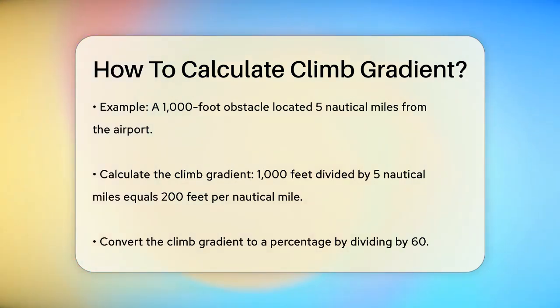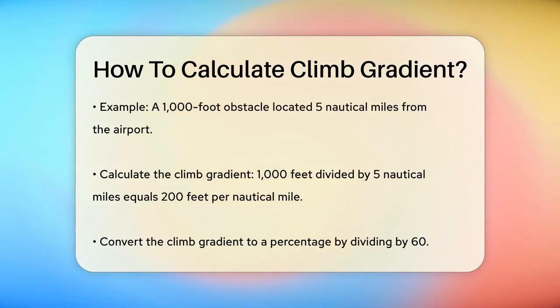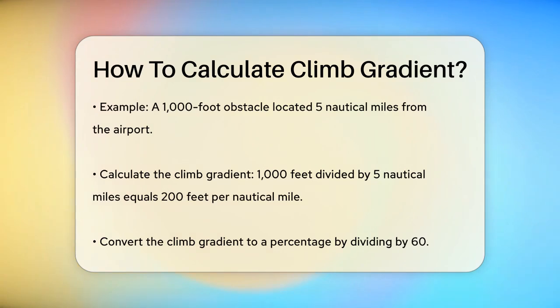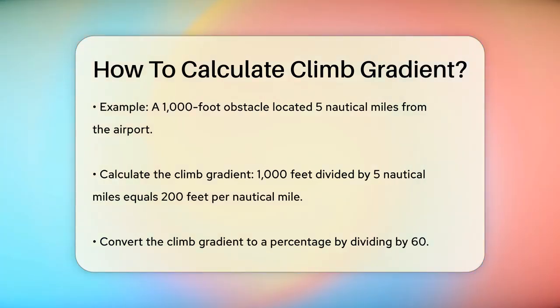Next, you need to convert this into a percentage gradient. To do this, you divide the climb gradient by 60. Using our example, 200 feet per nautical mile divided by 60 gives you a percentage gradient of 3.3%.